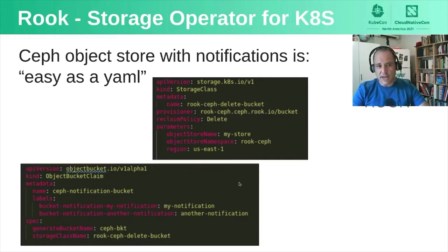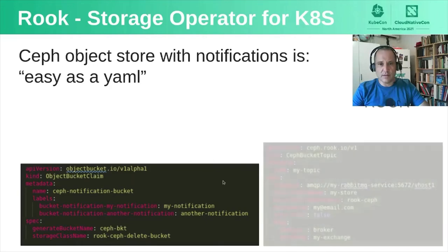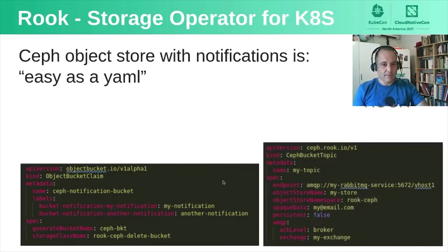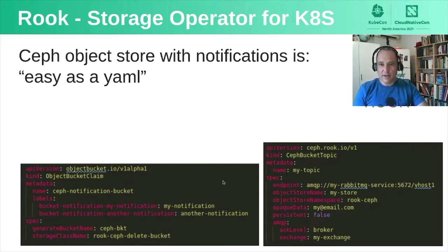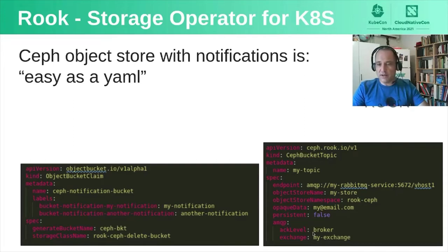Now we need to define the topics and notifications. Everything here is declarative, so you can define the bucket before the notification — it doesn't matter; everything eventually falls into place. We define the topic, which is the endpoint. Here we define the RabbitMQ server as the endpoint, giving details like the exchange to use, the acknowledgement level expected, whether we're using persistent notifications, and whether we can pass opaque data.